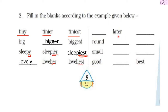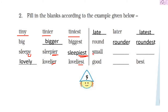Next we have 'later,' which is the comparative degree of an adjective. The positive form is 'late' and the superlative form is 'latest.' Then we have 'round' — the comparative form is 'rounder' and the superlative is 'roundest.'